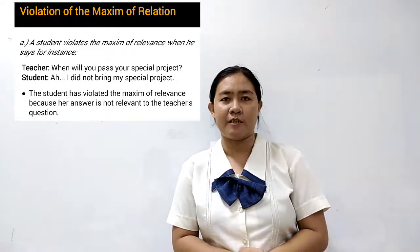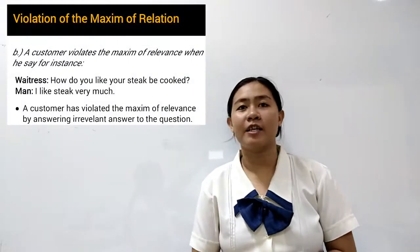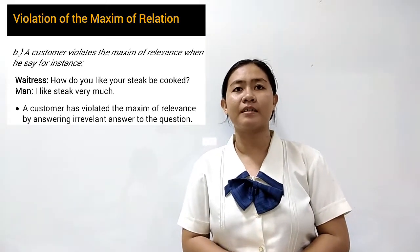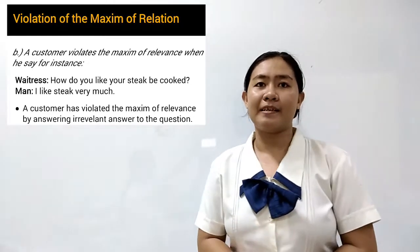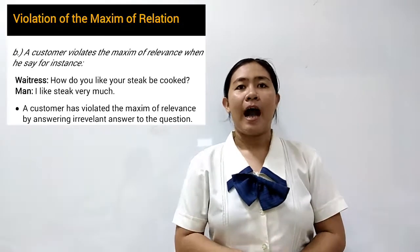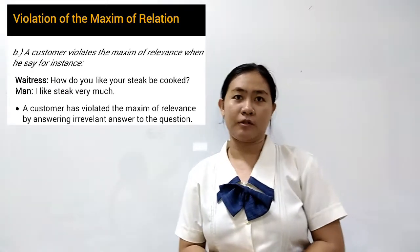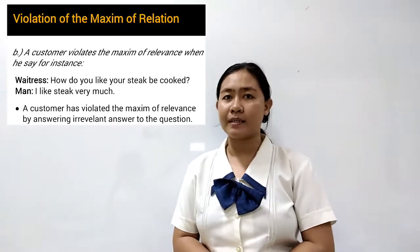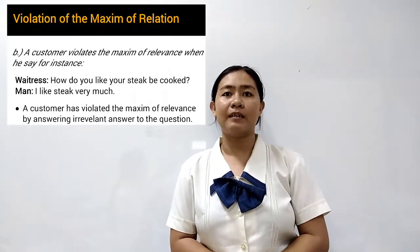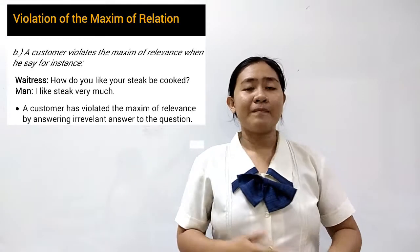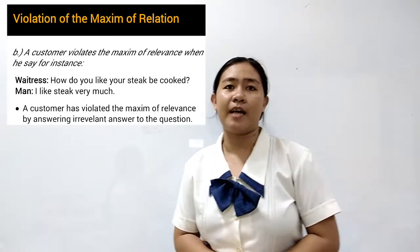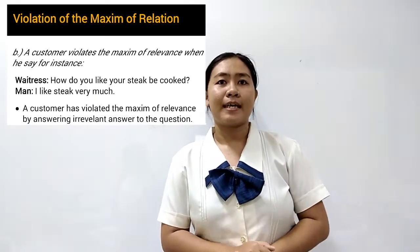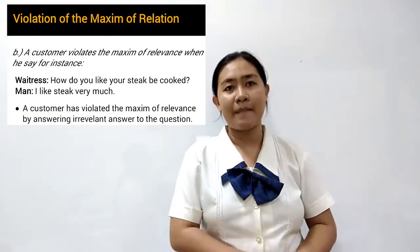Another example of violation of the maxim of relation: a customer violates the maxim of relevance when the waitress asks, 'How do you like your steak cooked?' and the man replies, 'I like steak very much.' The customer violated the maxim of relevance by giving an irrelevant answer. The correct answer should have been something like, 'I want the steak to be half cooked or fully cooked.'